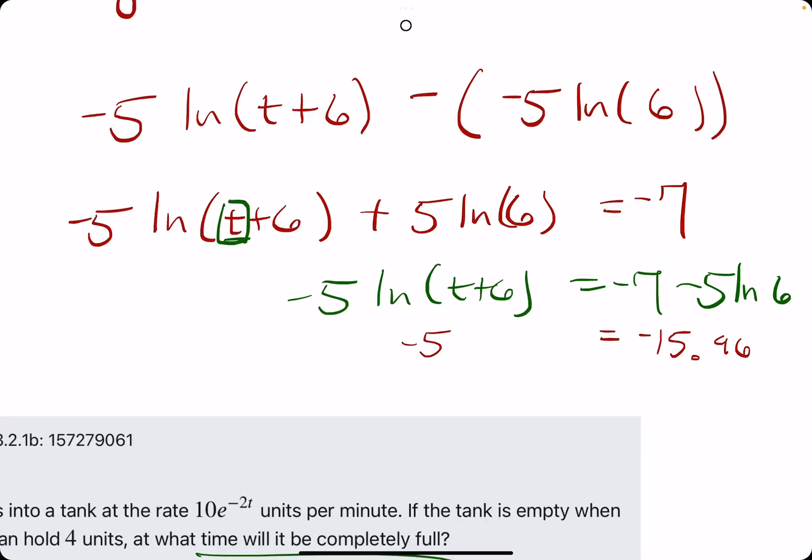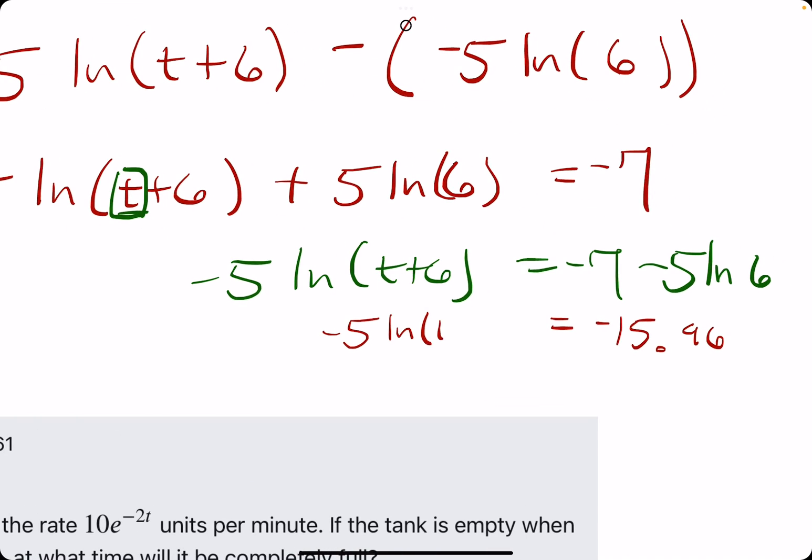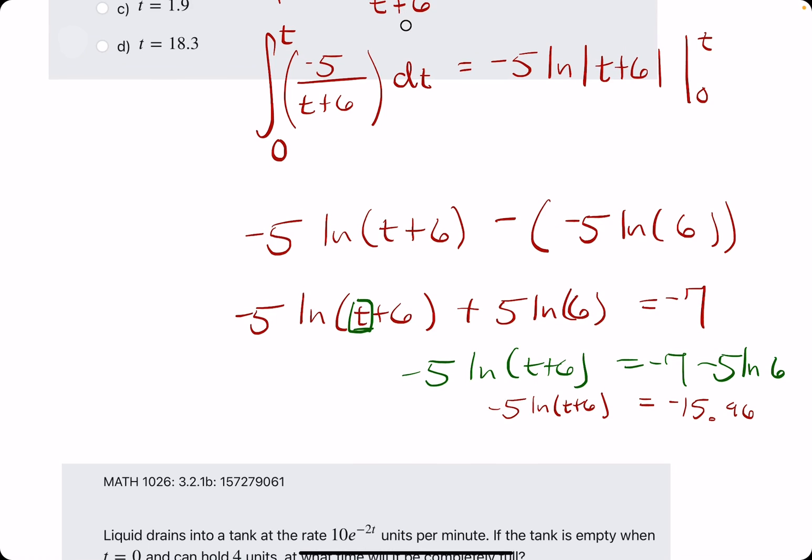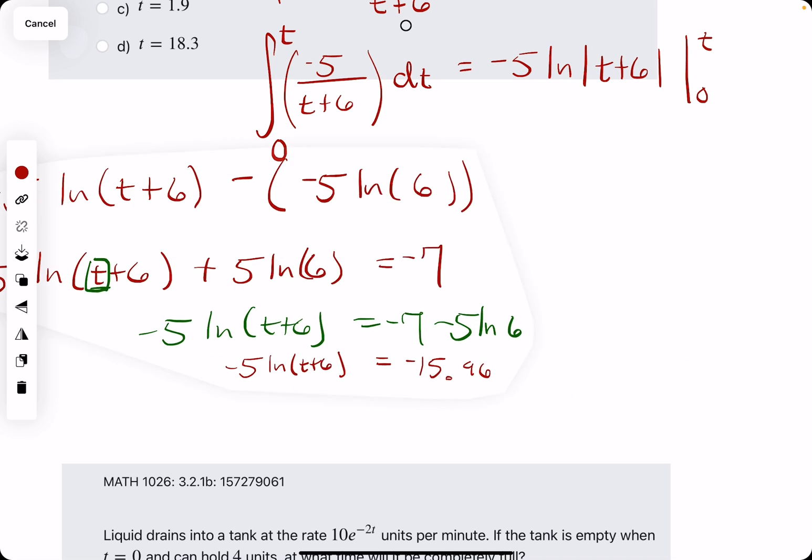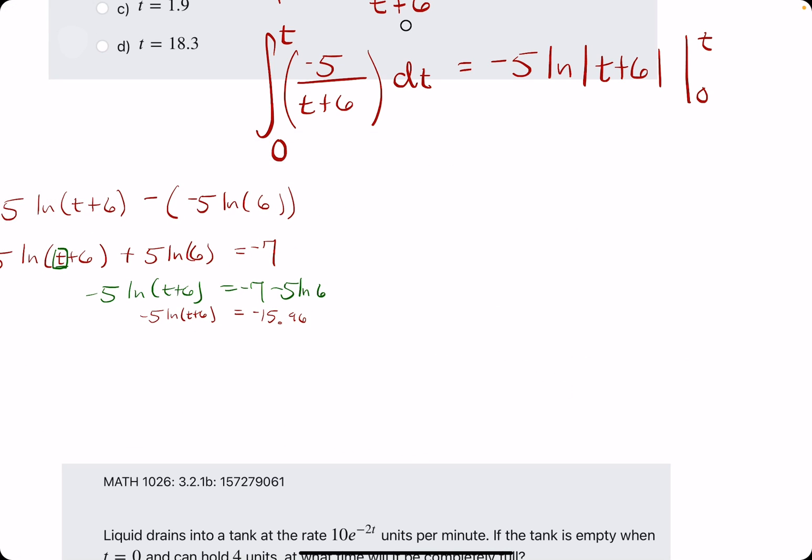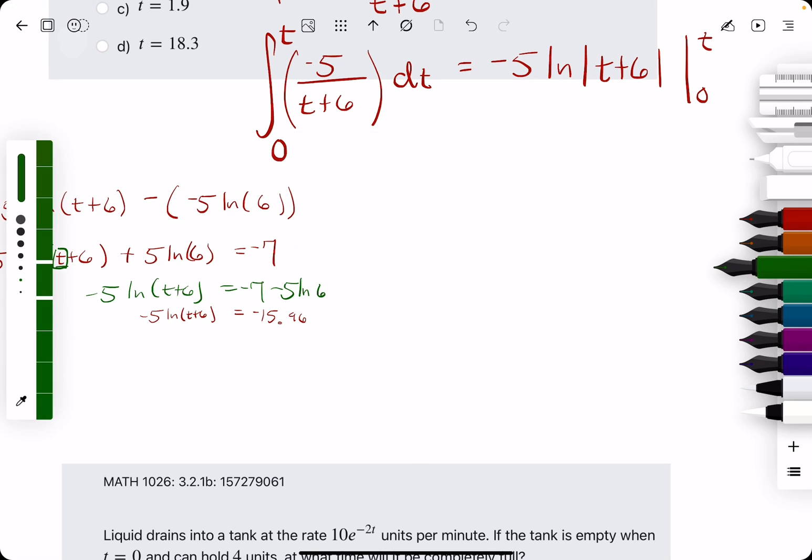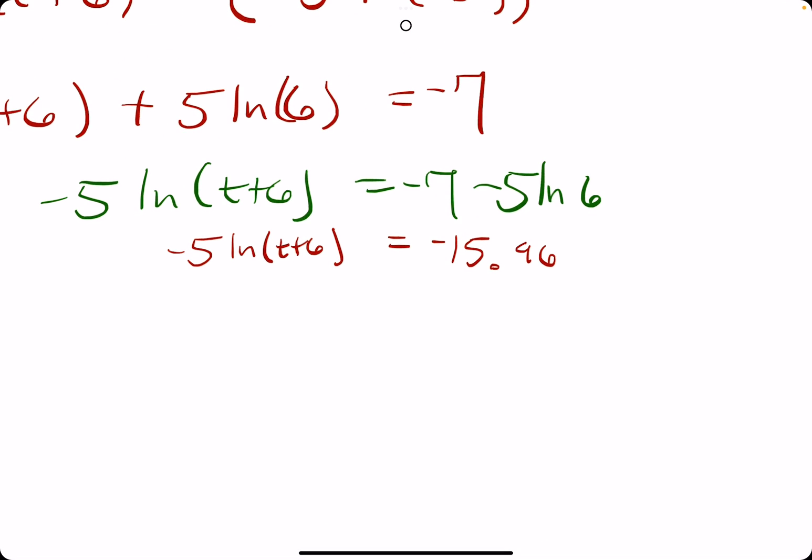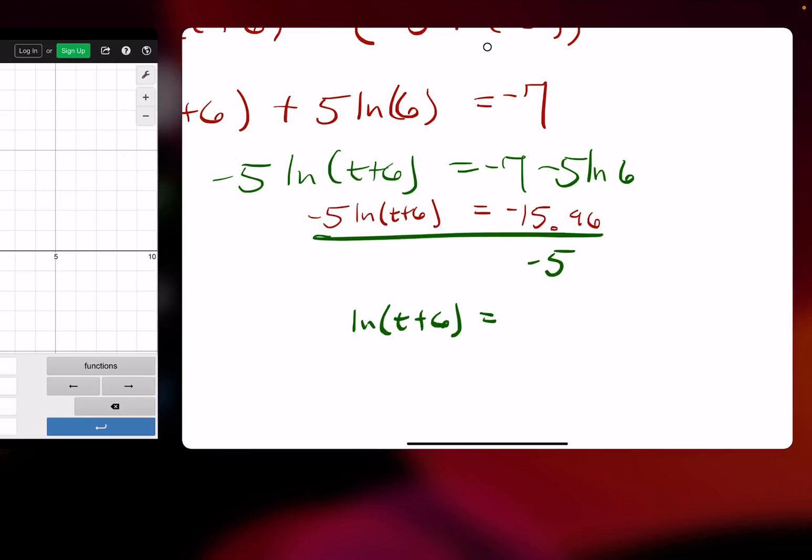On the left side, negative five ln of t plus six. Now to get closer to isolating t, we want to divide by negative five. Let's give ourselves some room here.